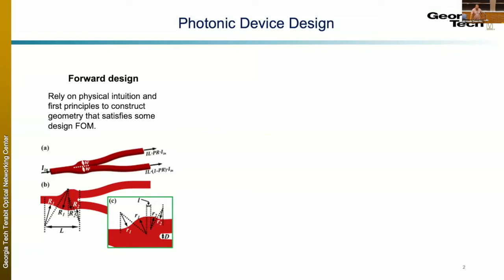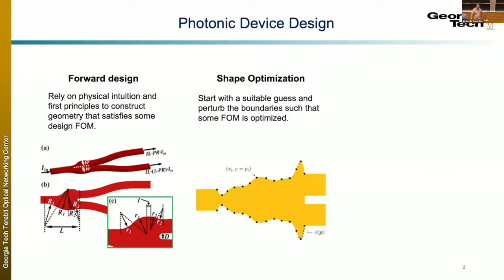Quite honestly, since forward design relies on a very small number of degrees of freedom that we can physically comprehend, due to the vastness of Maxwell's equations, there's so much more out there that we're not able to take advantage of. An alternative method that gained traction in the last 10–15 years, particularly with Maxwell problems, is shape optimization — starting with an initial guess from physical intuition and manually perturbing the boundaries using an optimization algorithm.